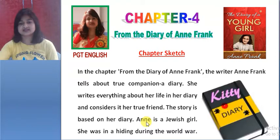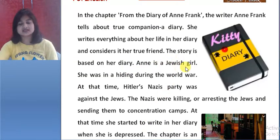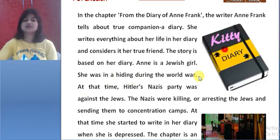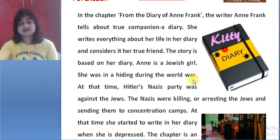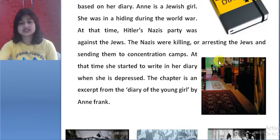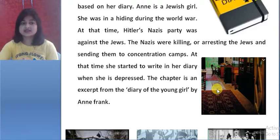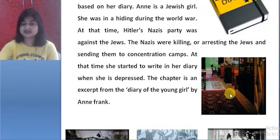Anne is a Jewish girl. She was in hiding during World War II, hiding with her family. This is the picture of the hidden room — her father's office — where Anne Frank hid with her family.